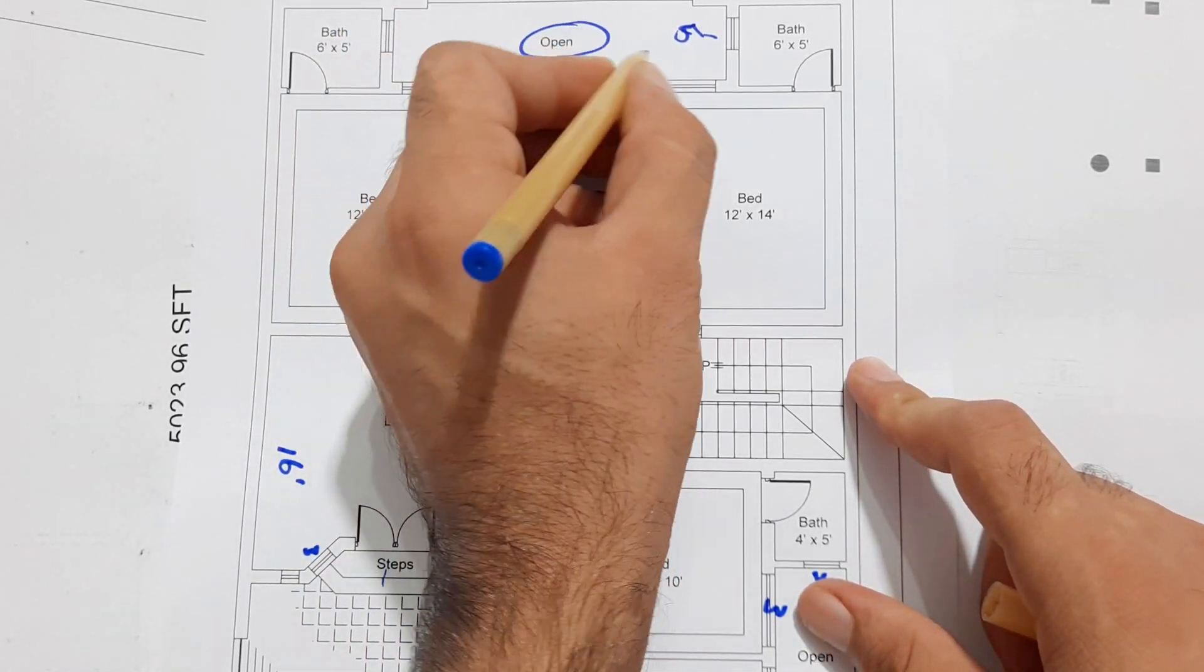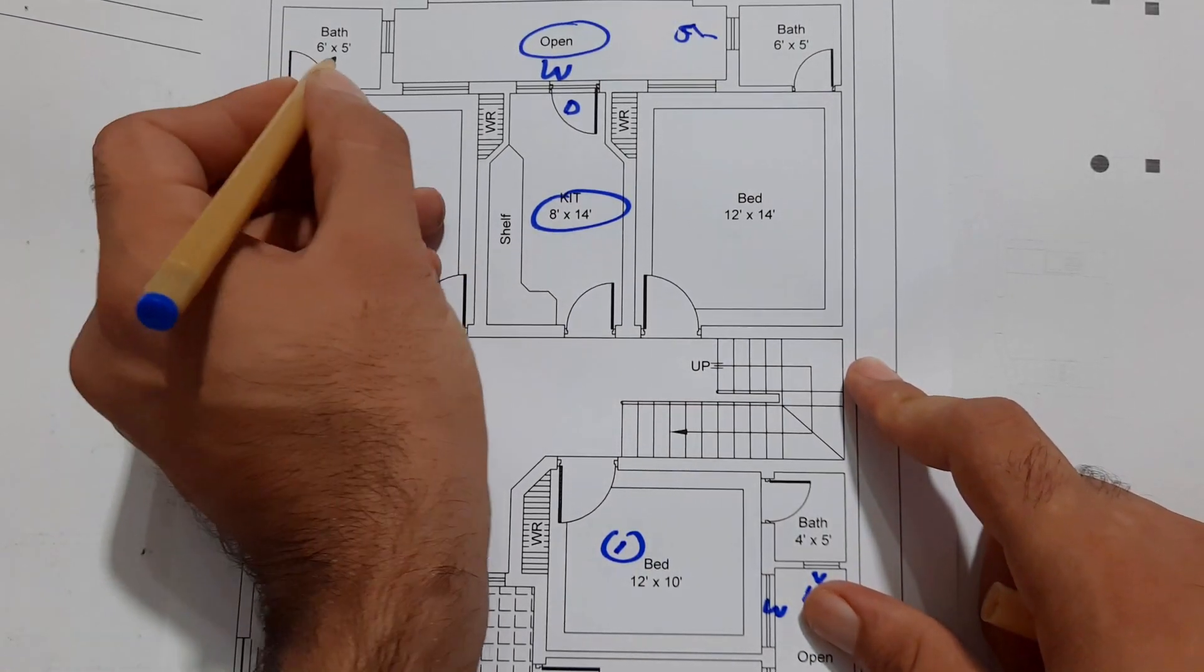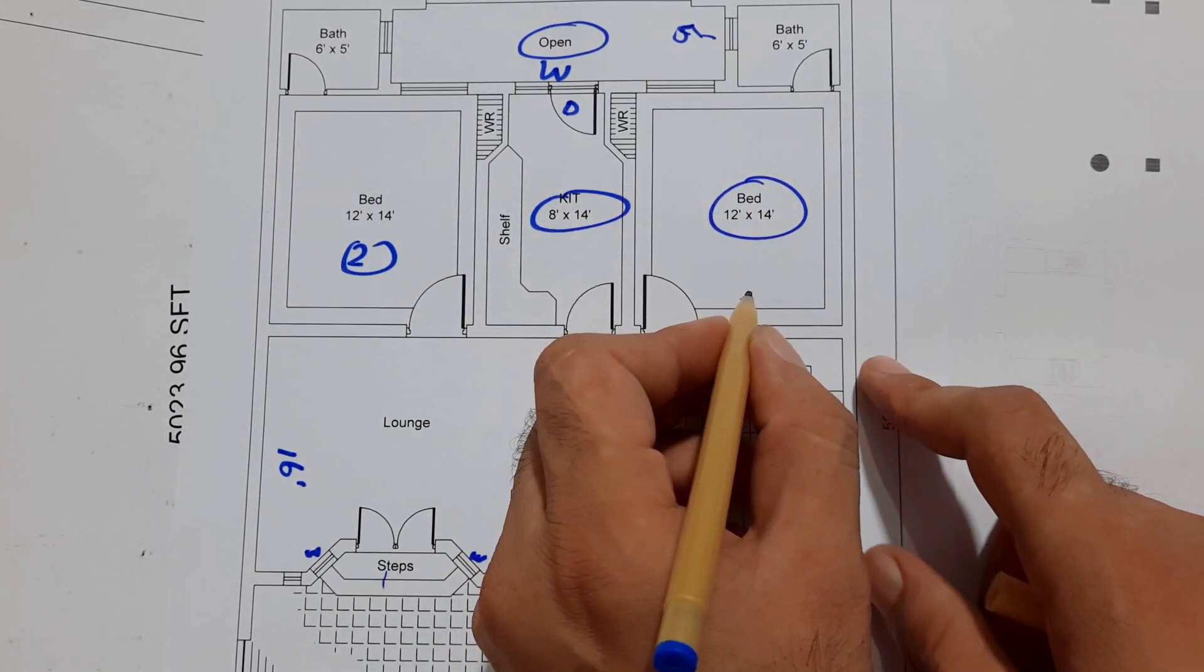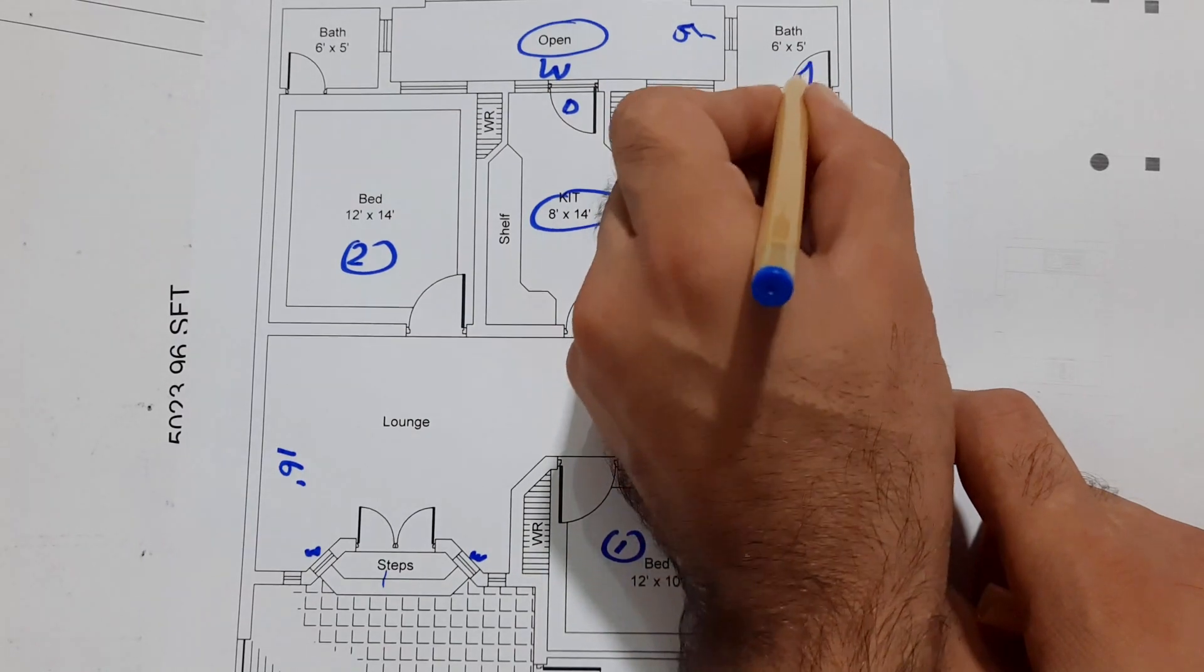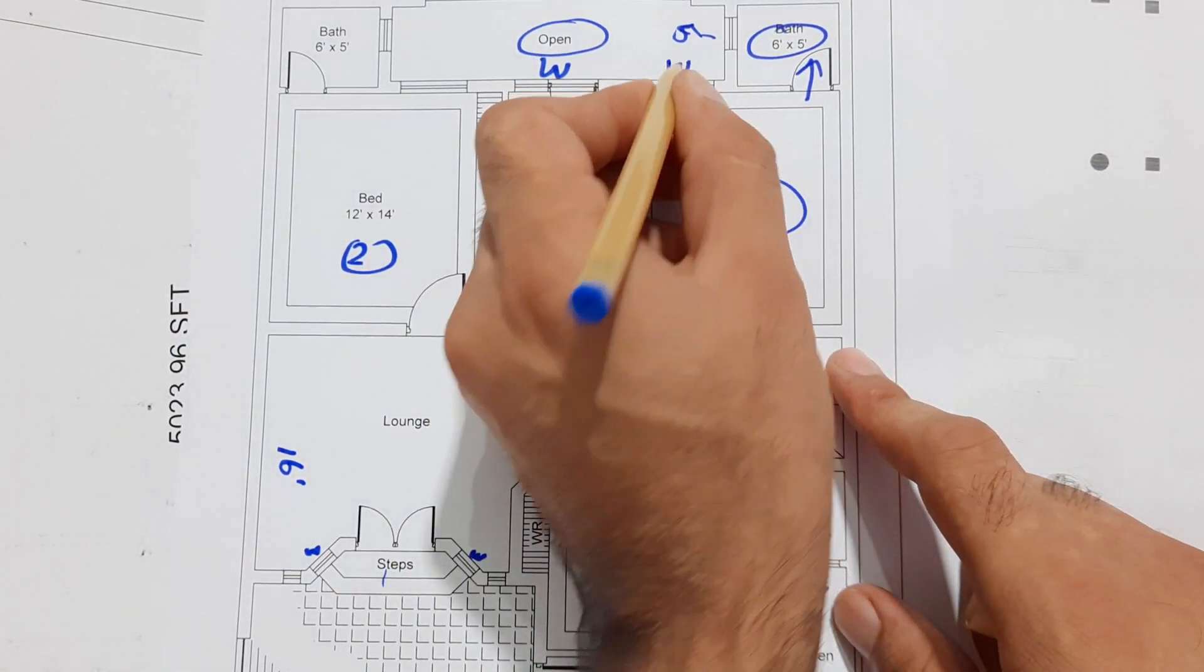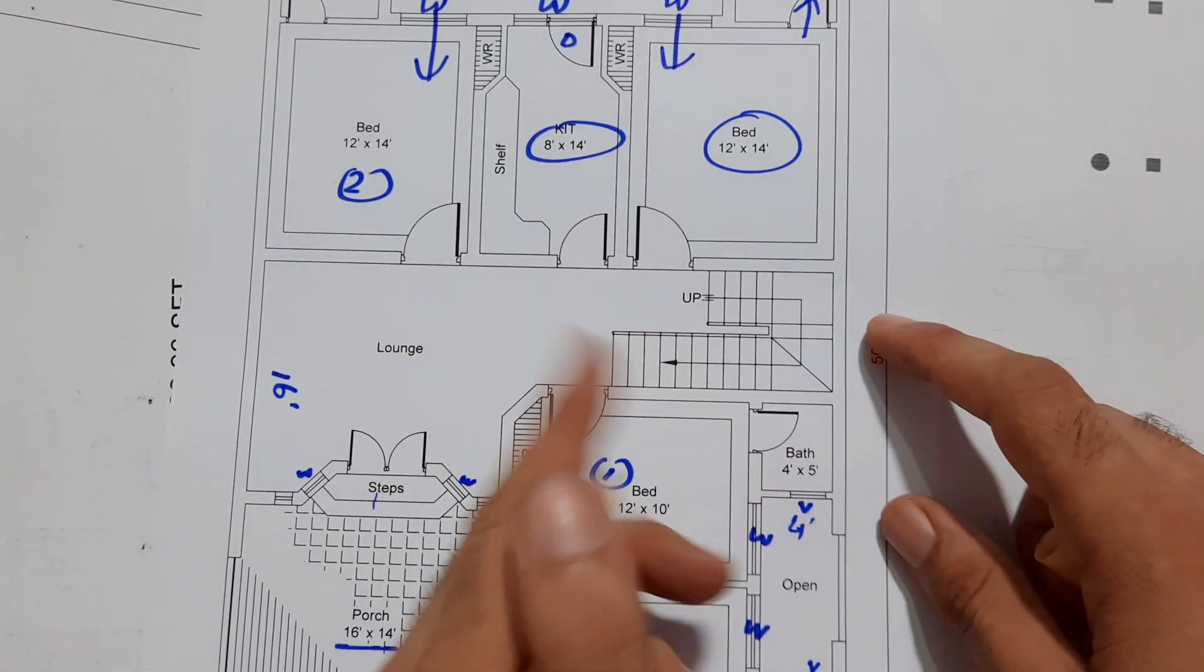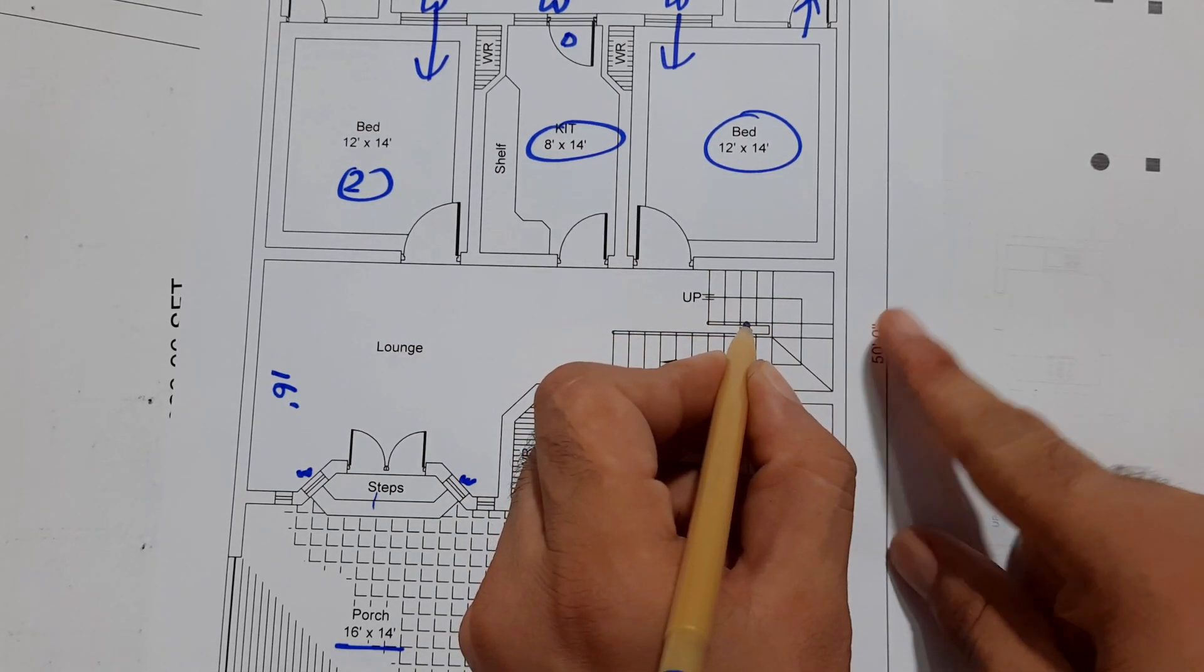Open sky. This is the bath for this bedroom - size of the bath is 6 by 5 feet. Next you can see this is the third bedroom which size is 12 by 14 feet. This is the bath - size of the bath is 6 by 5 feet. This is window, this window is for this one. Next you can see this is staircase for the first floor.